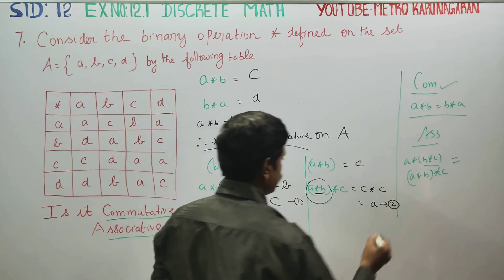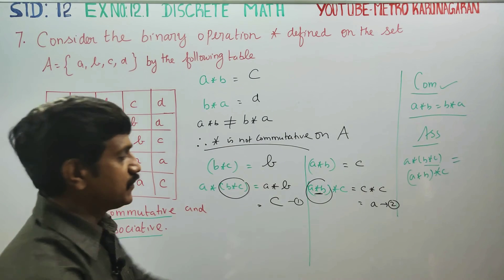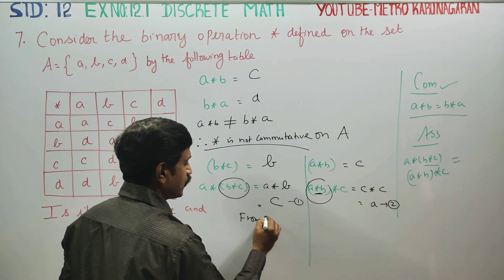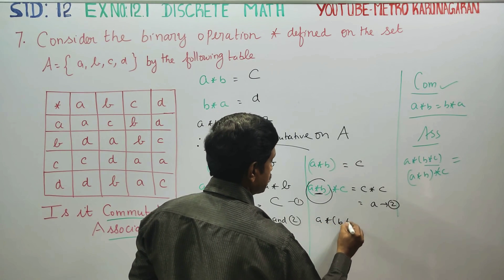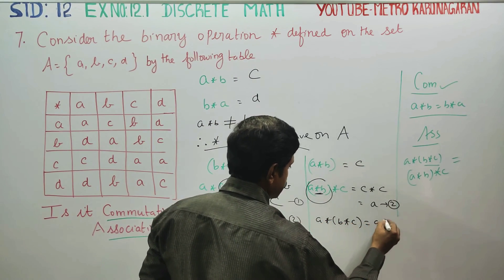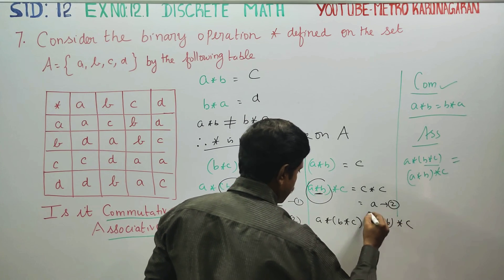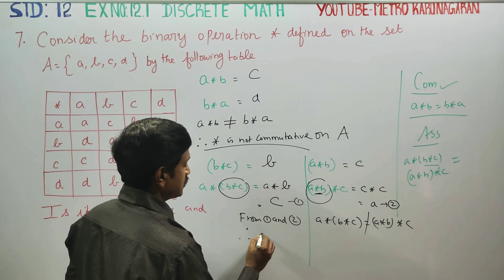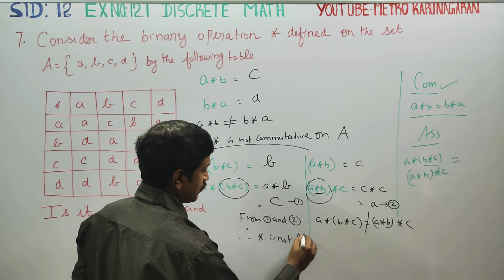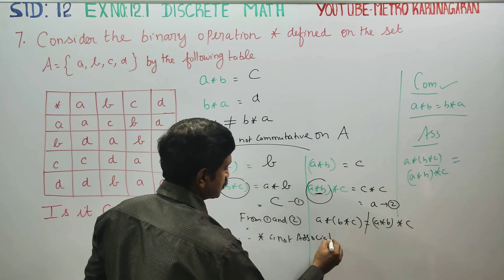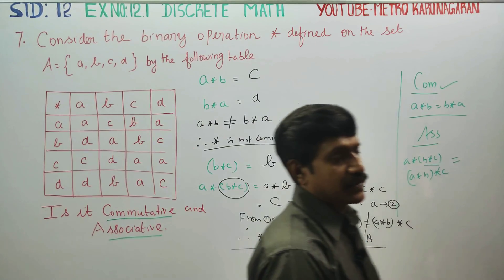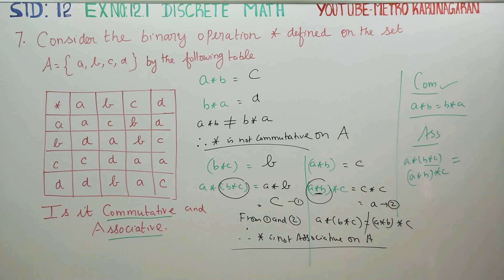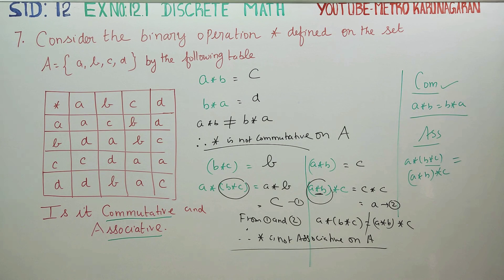From result 1 and result 2, a★(b★c) is not equal to (a★b)★c. Therefore, the operation ★ is not associative on A. Using the table, we have proved that the operation is not commutative as well as not associative.